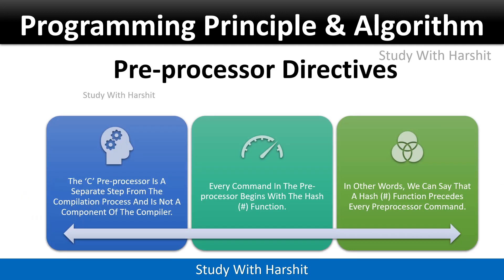Preprocessor directives: the C preprocessor is a separate step from the compilation process and is not a component of the compiler. Every command in the preprocessor begins with the hash symbol. In other words, a hash symbol precedes every preprocessor command.